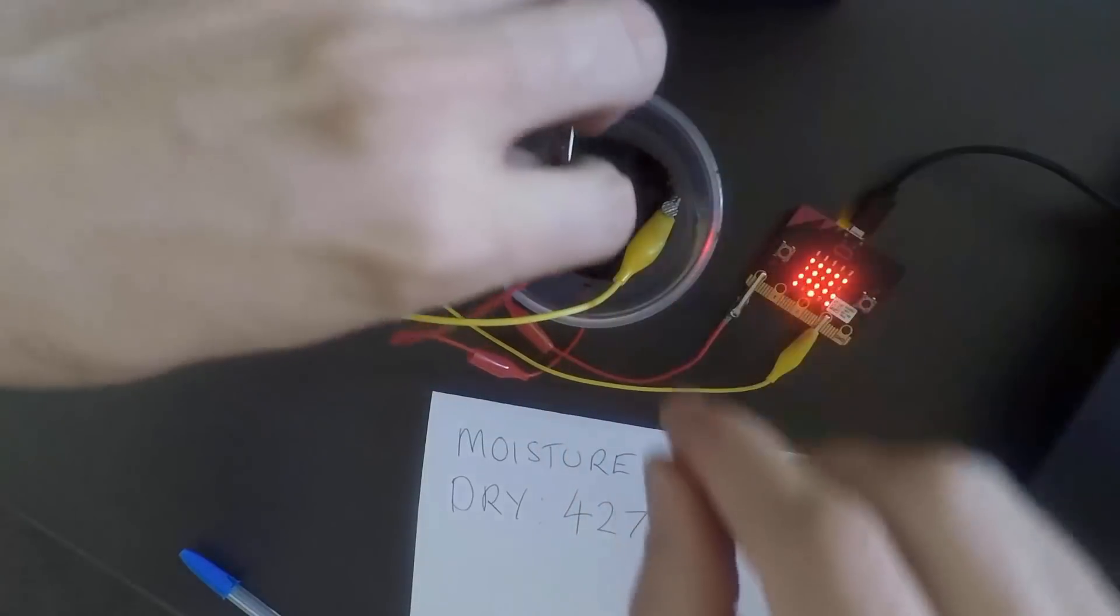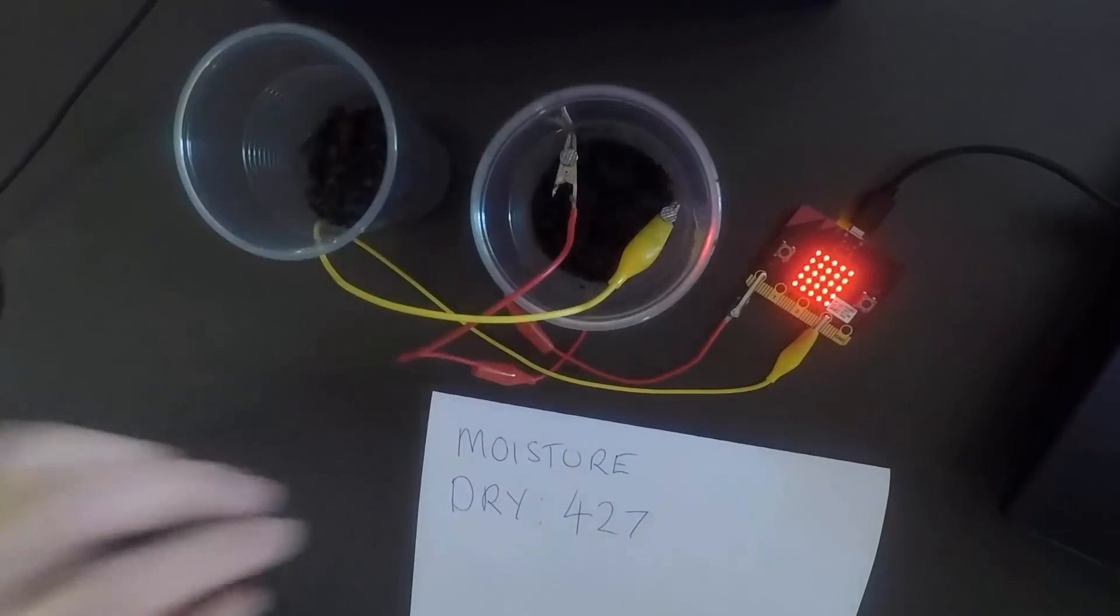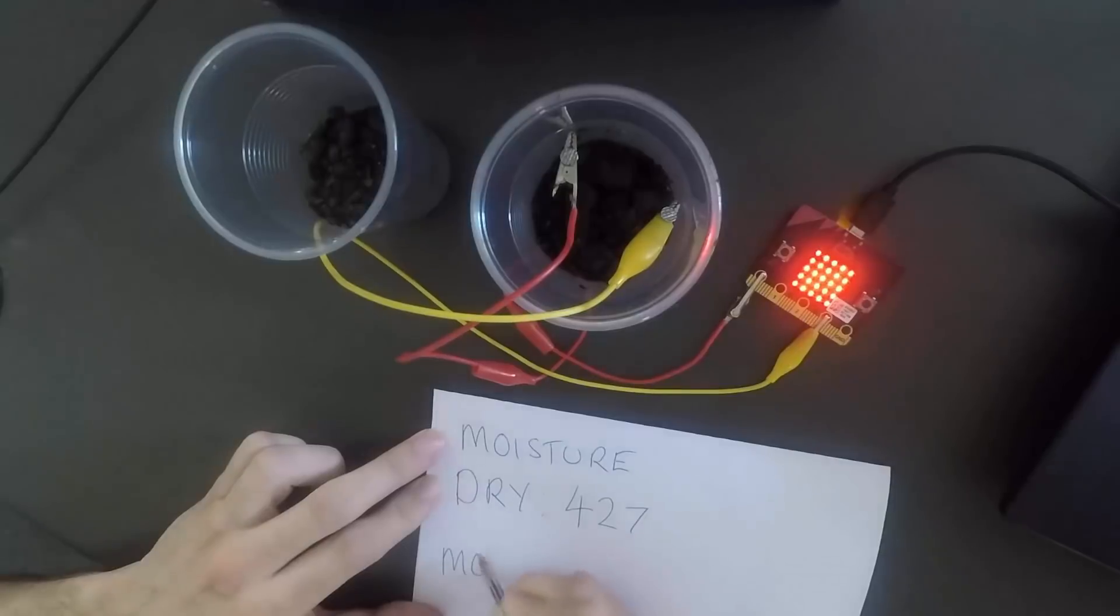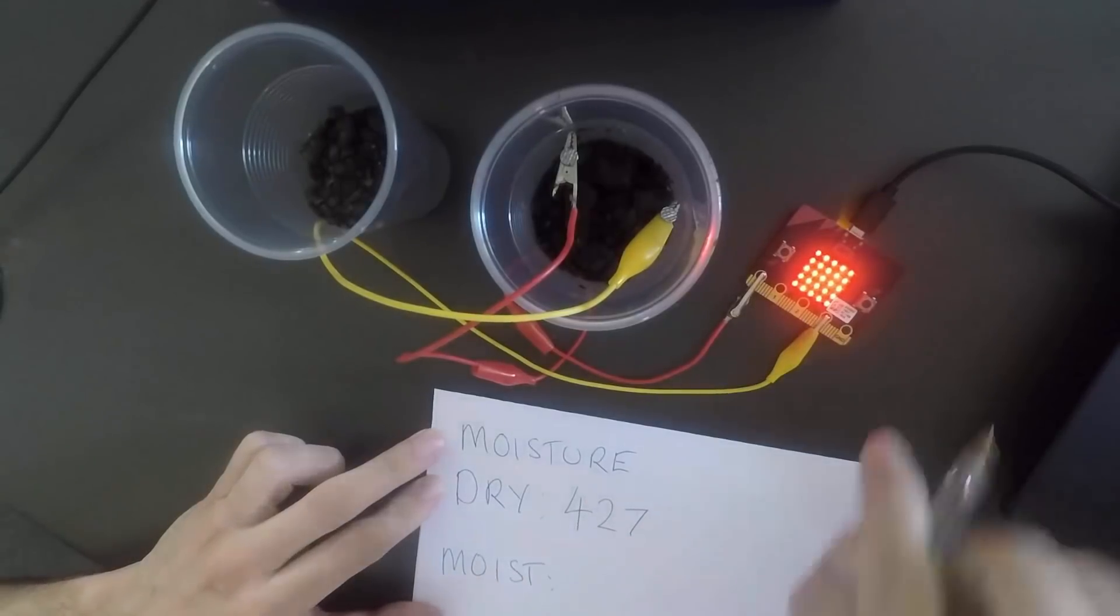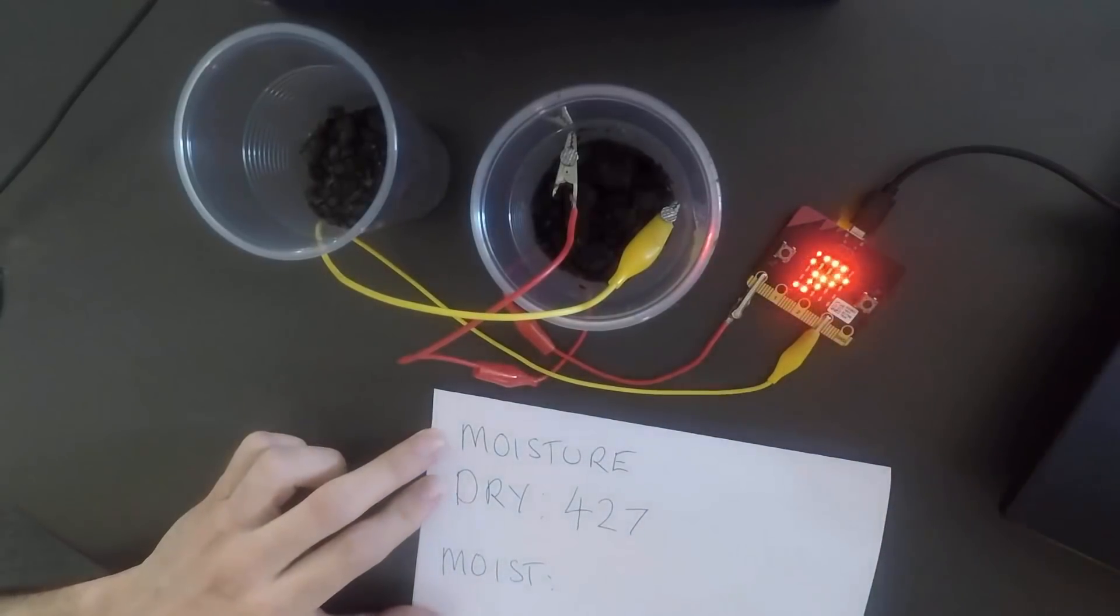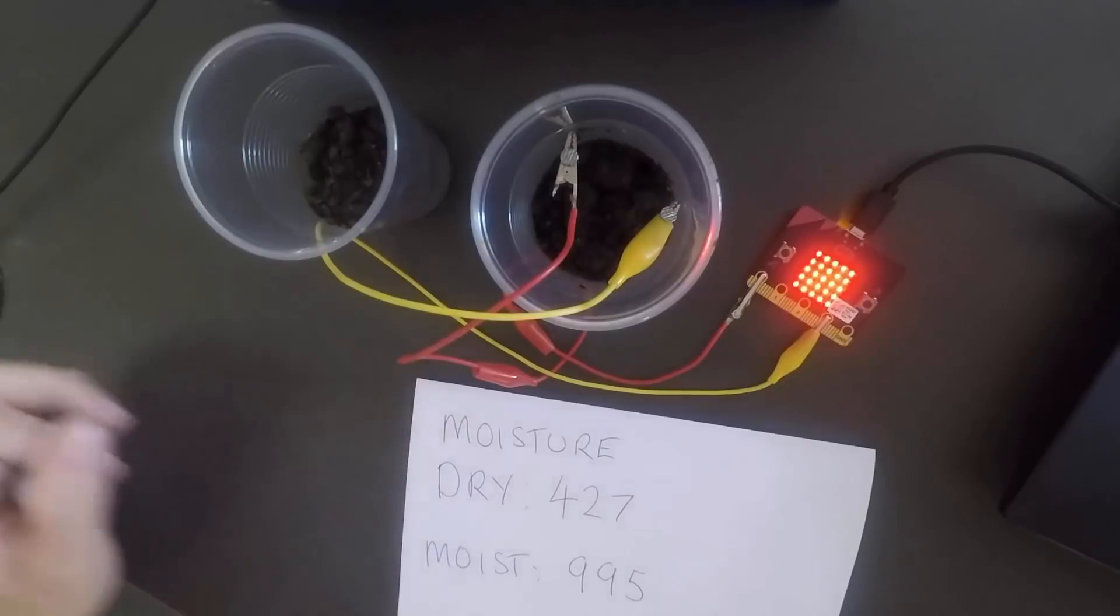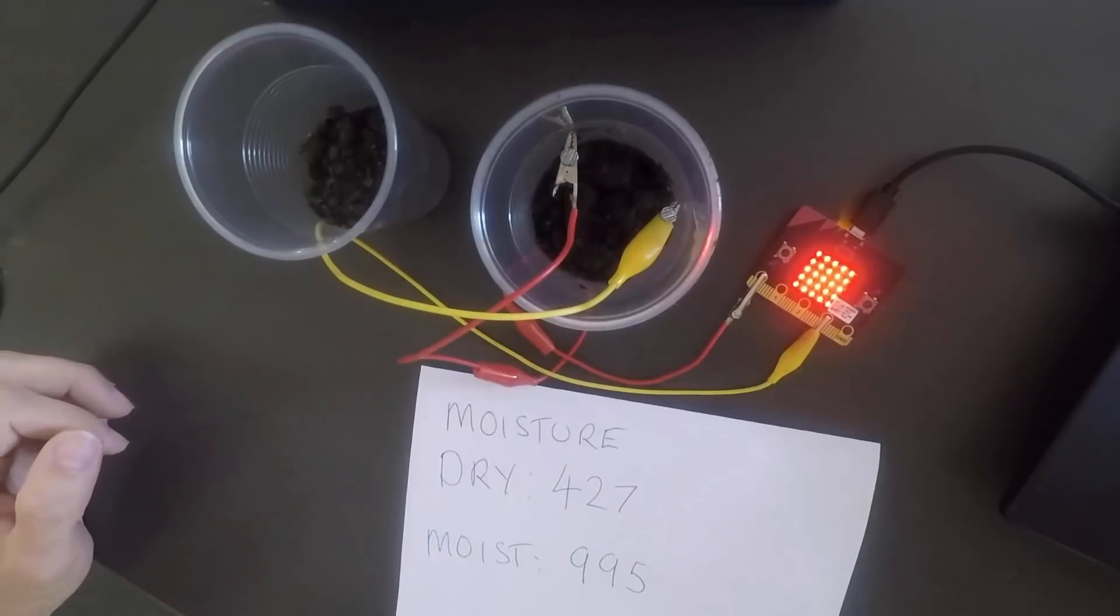If I take it and put it into the other soil which has a little bit of water in there, it will give a different reading. That reading is 995. We can see that the code for the micro:bit to measure the moisture is working properly.